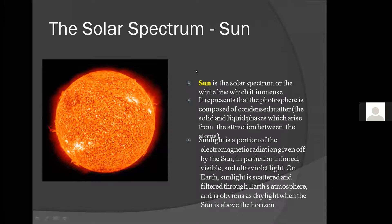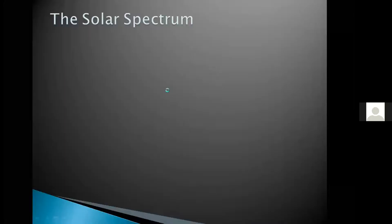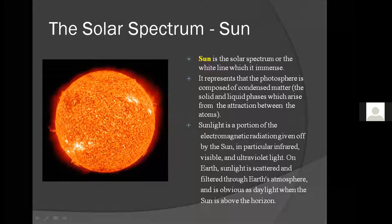I have noted down some points. First, the sun emits the solar spectrum as white light. Second, it represents that the photosphere is composed of condensed matter — meaning solid and liquid phases — which arises from the attraction between the atoms. In this photosphere there is also a presence of some gases.